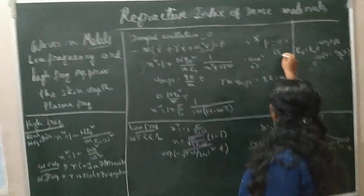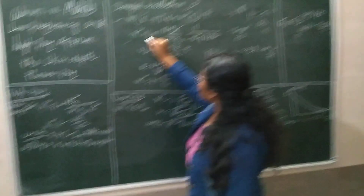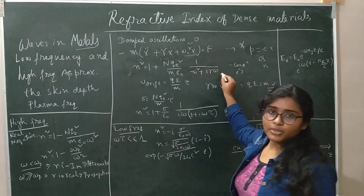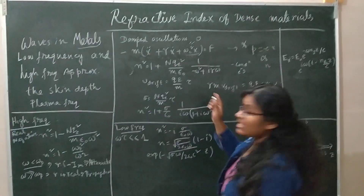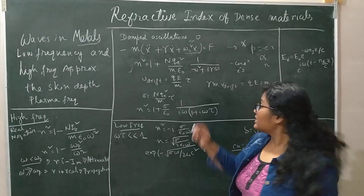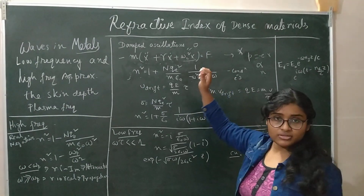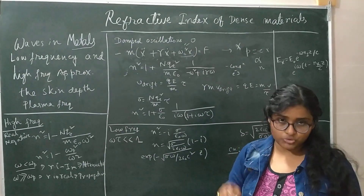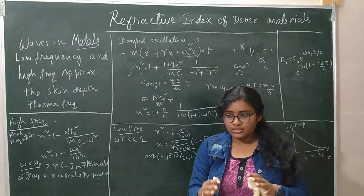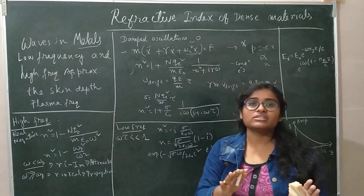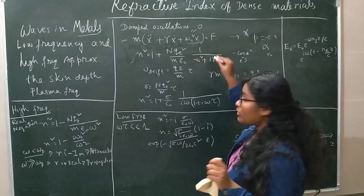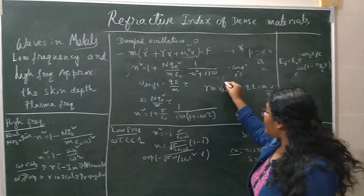The refractive index n² = 1 + nqe²/m × (expression with iγ) has both a real part and an imaginary part. The imaginary part of the refractive index arises from the damping of the oscillatory motion. The main concern now is how to find γ — the damping factor.